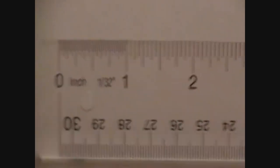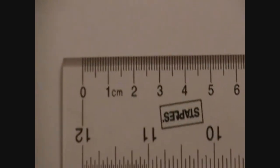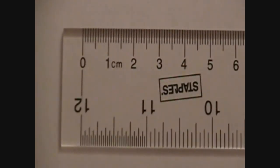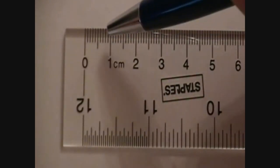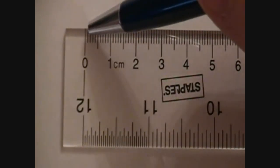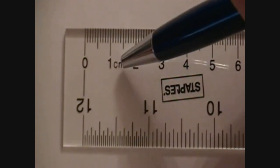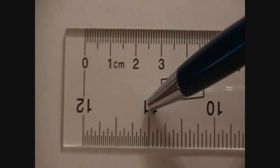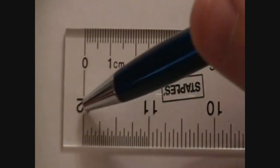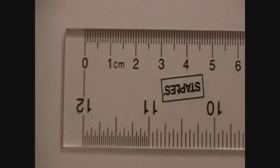The other side of the ruler is in centimeters, and the centimeters, the numbers are a lot closer together, like we see with 0, 1, 2, 3, 4, and there's not nearly as many little lines in between. We also see the label cm, which means centimeters. Here's the inches, really far apart, centimeters really close together.